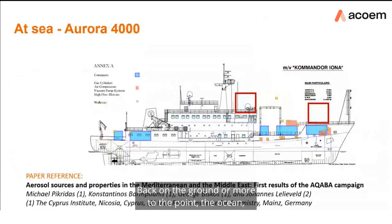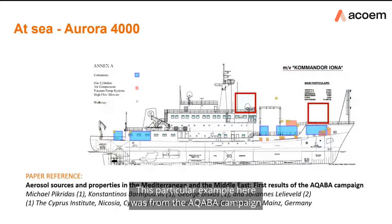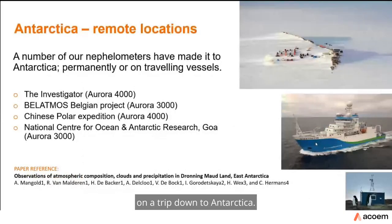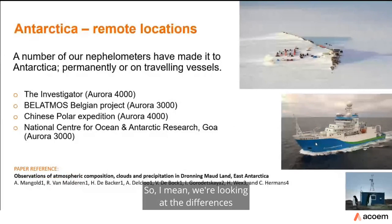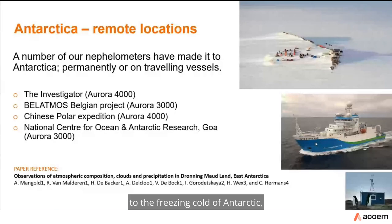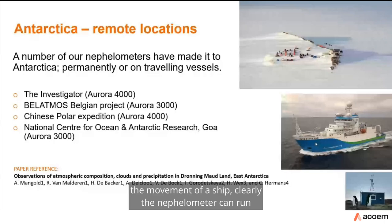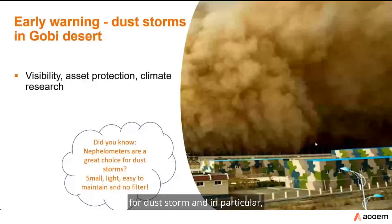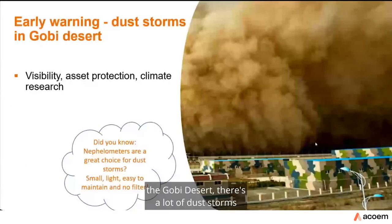The nephilometer has also been used on several ships, including the AQABA campaign in the Mediterranean and Middle East, and on the CSIRO RV Investigator on a trip to Antarctica. It is also in use at several permanent stations in Antarctica. So from an aircraft at very low pressure and high altitude to the freezing cold of Antarctica to the movement of a ship, the nephilometer can clearly run under quite different and significant measurement conditions.